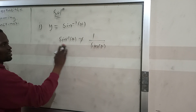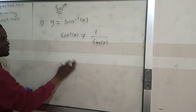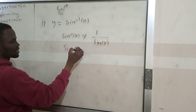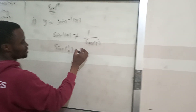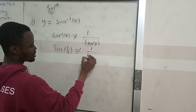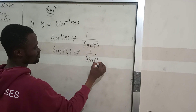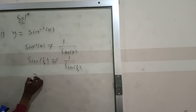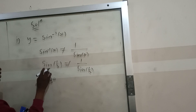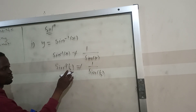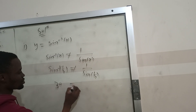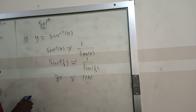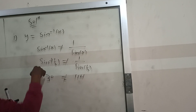If you let x equal to half and put it inside, you get sine of half, and the answer would be 30. But for sine inverse, the answer would be 30, and for 1 over sine, the answer would be different — so they are not equal. You can't treat them the same way.